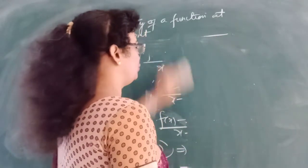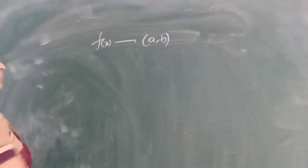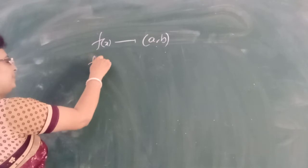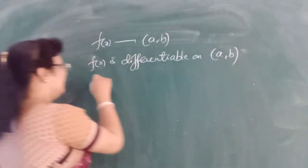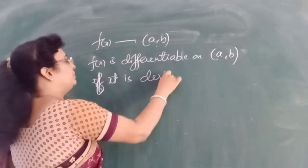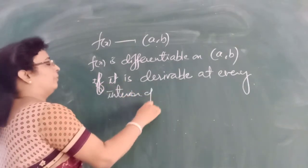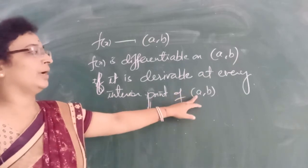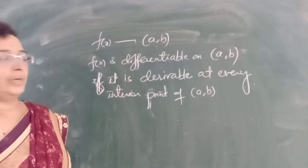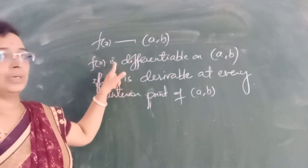The next thing is how to check whether a function is differentiable on an open interval or closed interval. If f(x) is defined on an open interval (a, b), then f(x) is differentiable on this open interval if and only if it is derivable at every interior point of the open interval (a, b). Since it is open, neither a nor b are counted. So if the function is derivable at every point of (a, b), we say f(x) is differentiable on the open interval (a, b).